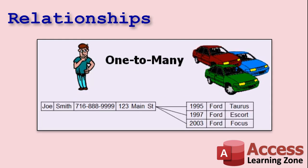One-to-many is the big one. One customer, many vehicles. One customer, many contacts — multiple phone numbers or addresses in a separate table, so you're not limited to three phone number fields in your primary table. You could also do one vendor selling multiple products.